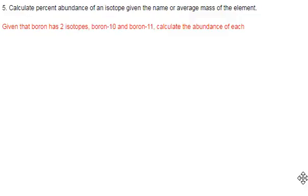Objective 5: calculate the percent abundance of an isotope given the name or average mass of the element. So this is the other type of weighted average they'll expect you to find.